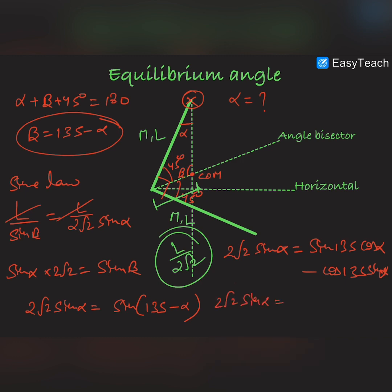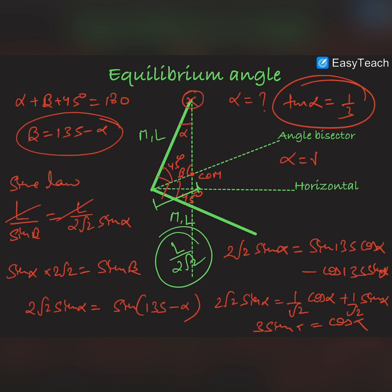Now, sin 135° = 1/√2 and cos 135° = −1/√2. Substituting: 2√2 sin α = (1/√2) cos α − (−1/√2) sin α = (1/√2) cos α + (1/√2) sin α. Simplifying, 3 sin α = cos α, and therefore tan α = 1/3, so α = tan⁻¹(1/3). This is the equilibrium angle for the L-shaped rod.